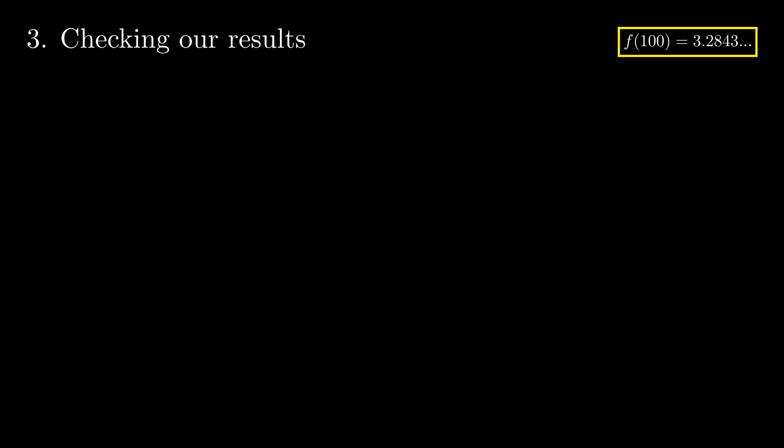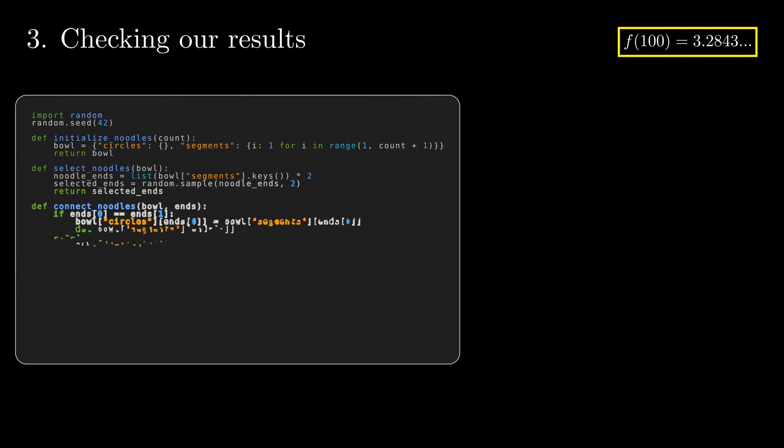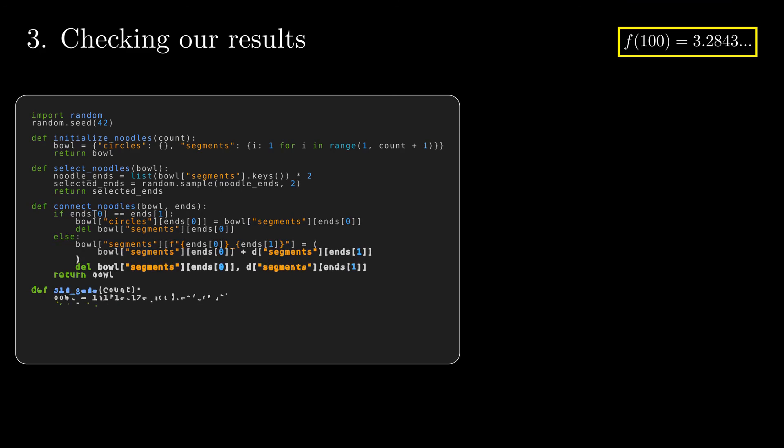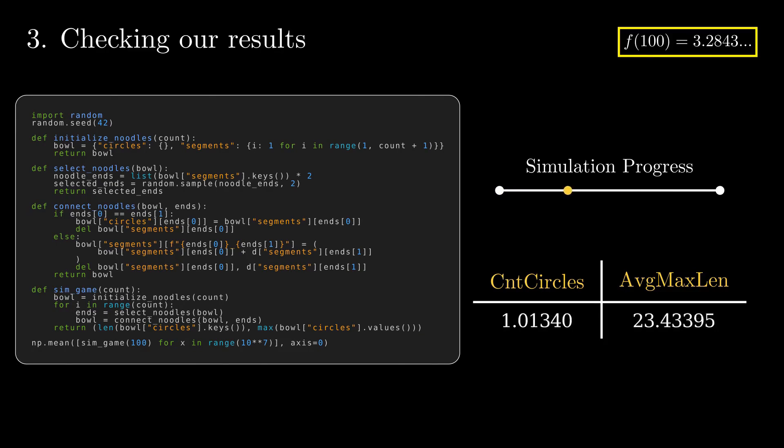Some other questions that can arise range from facile to demanding. For example, what is the probability that we only have one circle? Or what is the expected length, in noodles, of the vastest circle? With this in mind, the following code answers the last question and confirms our results up until now.